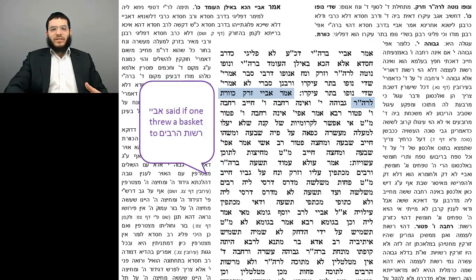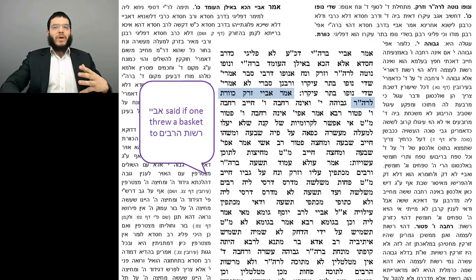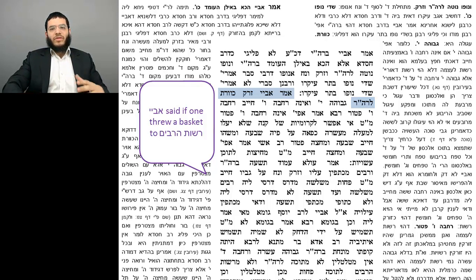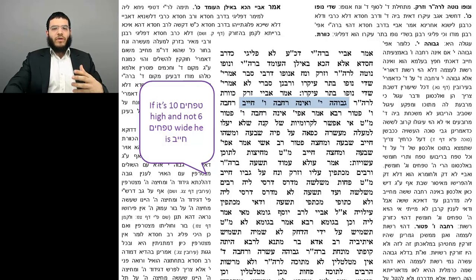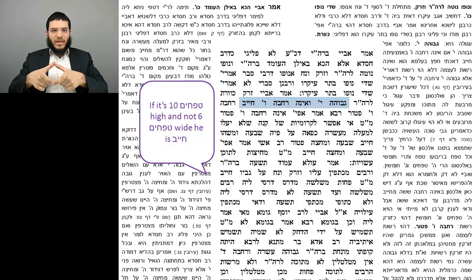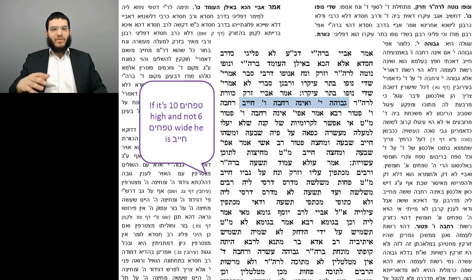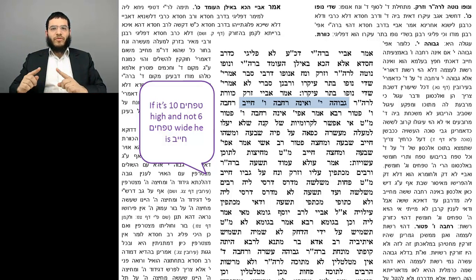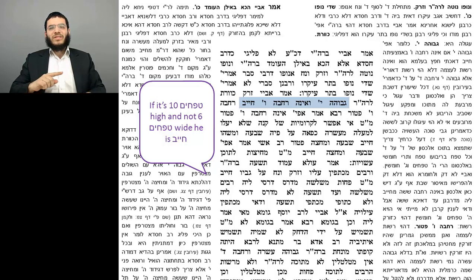Amar Abaye — Abaye said: if one threw a basket to the reshus harabim — these baskets were made out of reeds and were round, a circular basket — the din is: if it's ten tefachim high but not six tefachim wide across the middle of the basket, meaning the diameter is not six tefachim wide, then as Rashi explains, although generally a reshus hayachid is ten tefachim high and four tefachim by four tefachim wide, when it comes to a round object it has to be six tefachim wide in order to be a reshus hayachid.